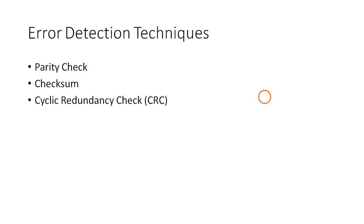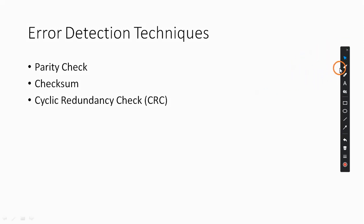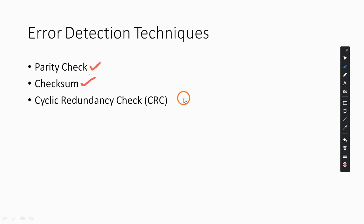Hello everyone, welcome to this session. In this video we are going to look at different error detection techniques and error correction techniques. In error detection techniques we have three: parity check, checksum, and CRC — cyclic redundancy check. Let's start with the first technique, which is parity check.